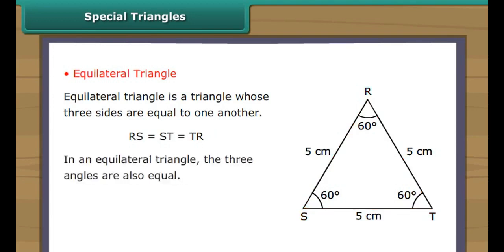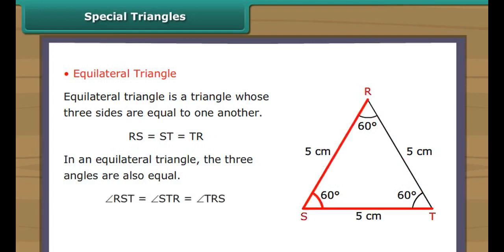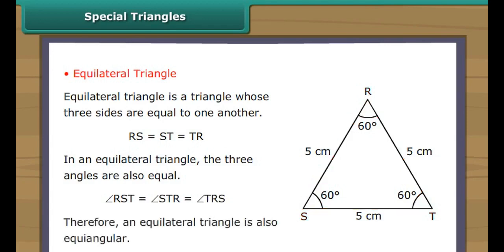In an equilateral triangle, the three angles are also equal. In triangle RST, angle RST equals angle STR equals angle TRS. Therefore, an equilateral triangle is also equiangular.